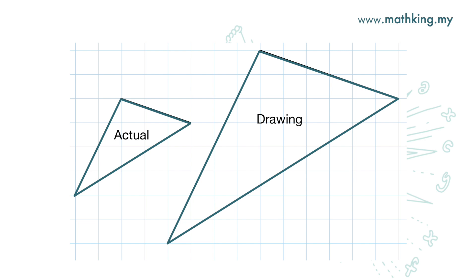Now for this next example, we must again make sure which is the actual object and which is the drawing. The one on the left is the actual object XYZ, and the one on the right is the drawing X prime, Y prime, Z prime. We need only to take the ratio of the length of the drawing to the length of the actual object to get the scale.